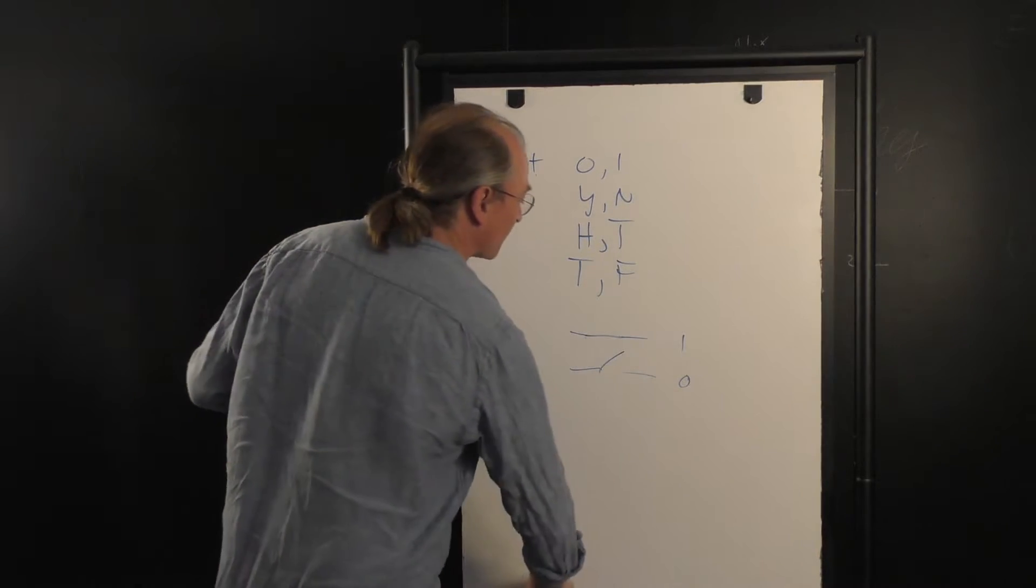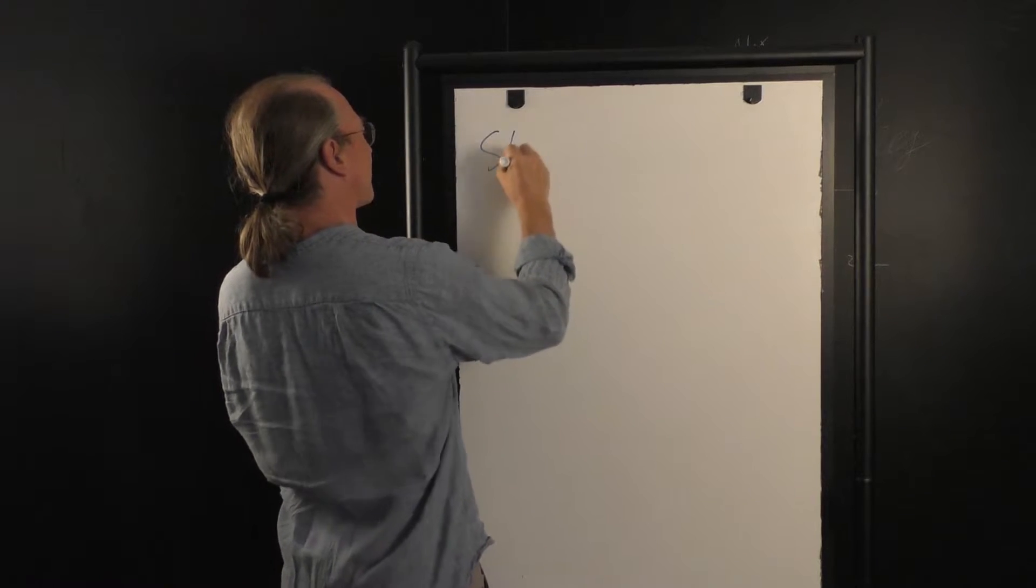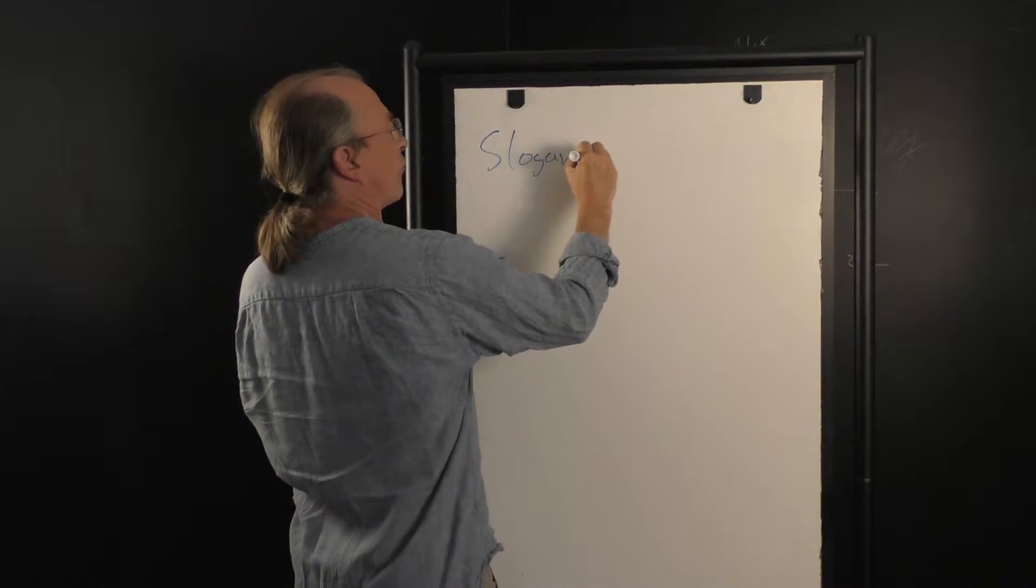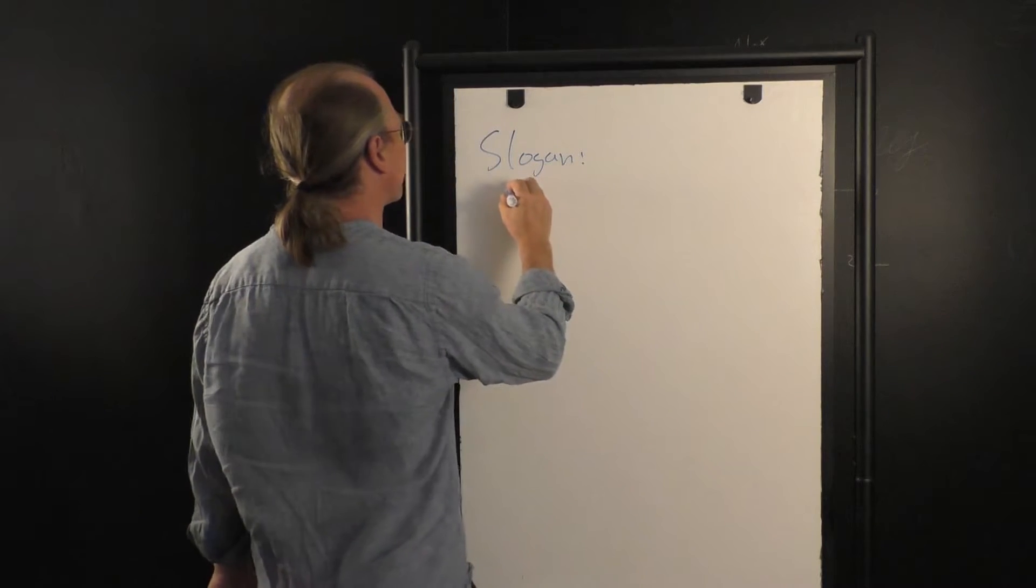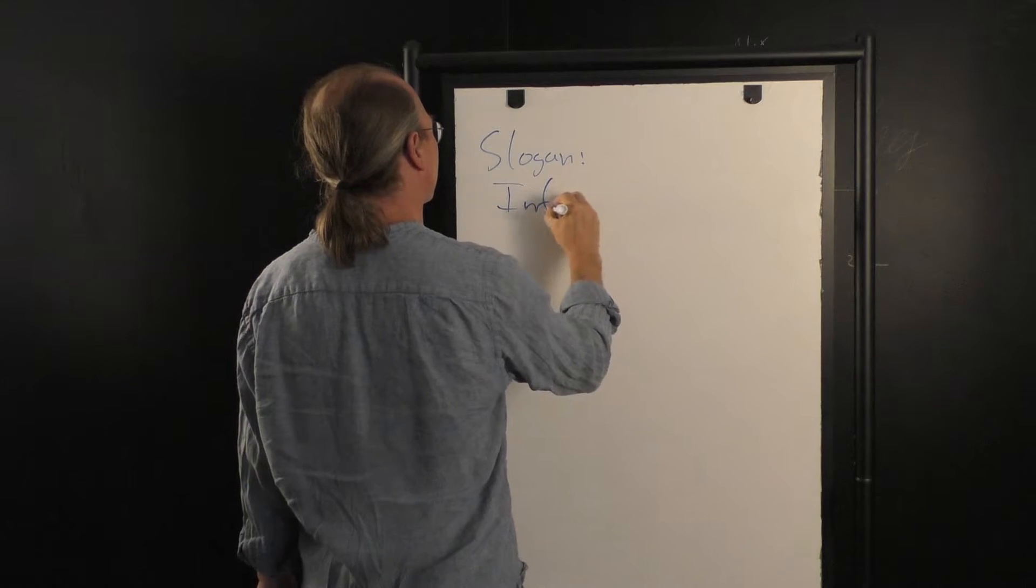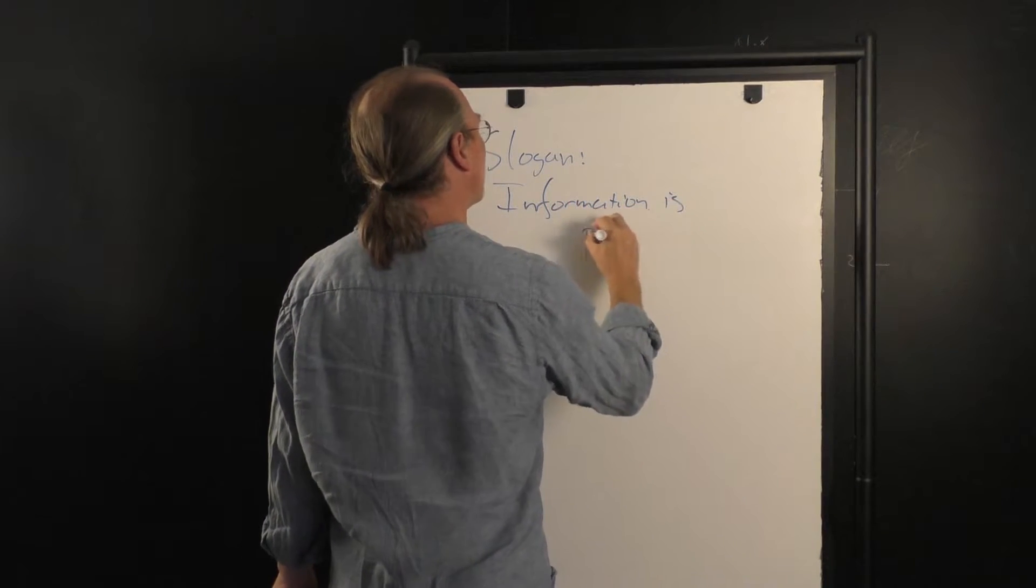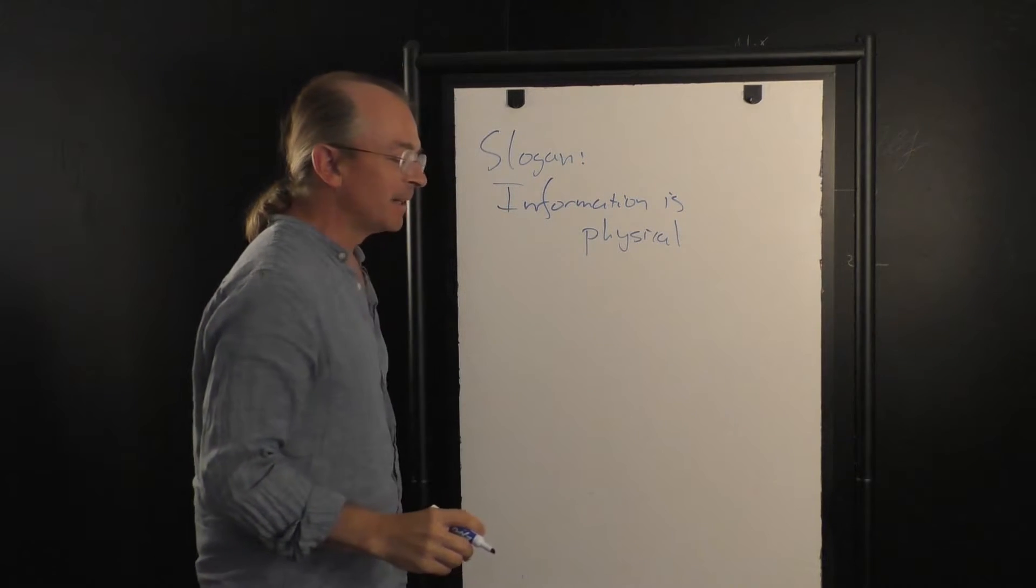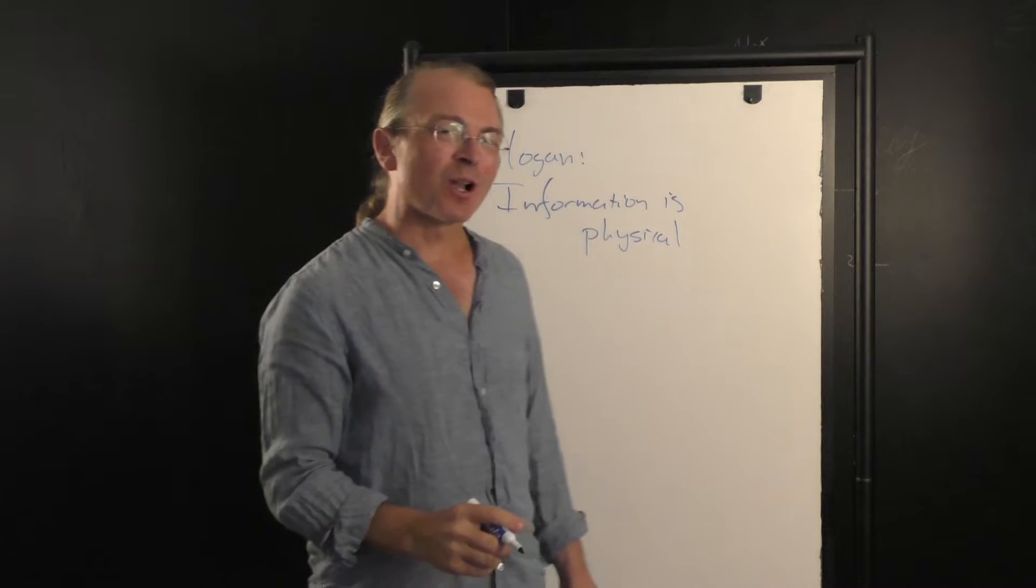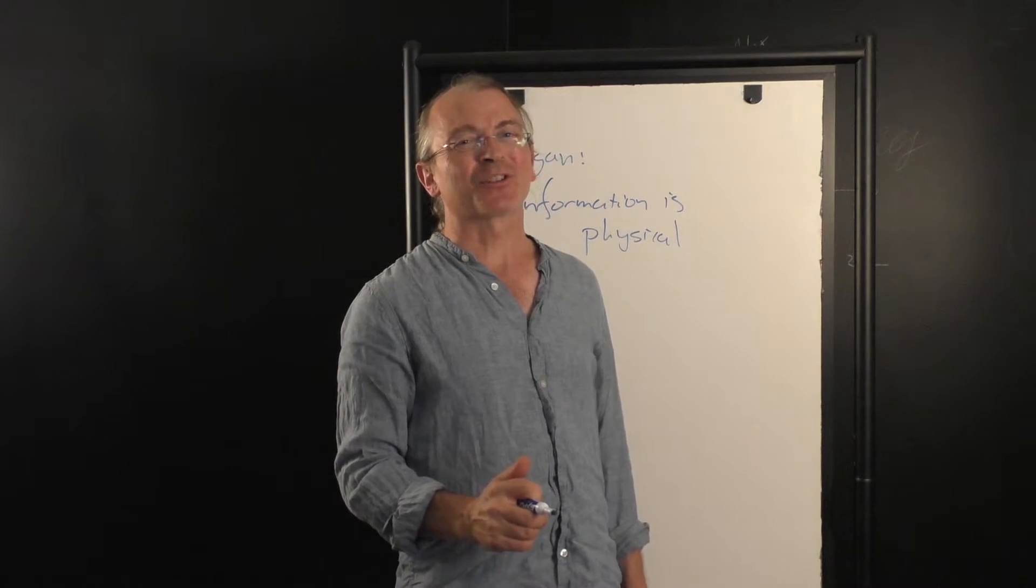Now there's a famous saying, really a slogan, from Rolf Landauer at IBM: information is physical. What does this mean? Information is physical. Well, it's a slogan so it's not clear what it means. It's kind of like the slogan 'information is the difference that makes a difference.'